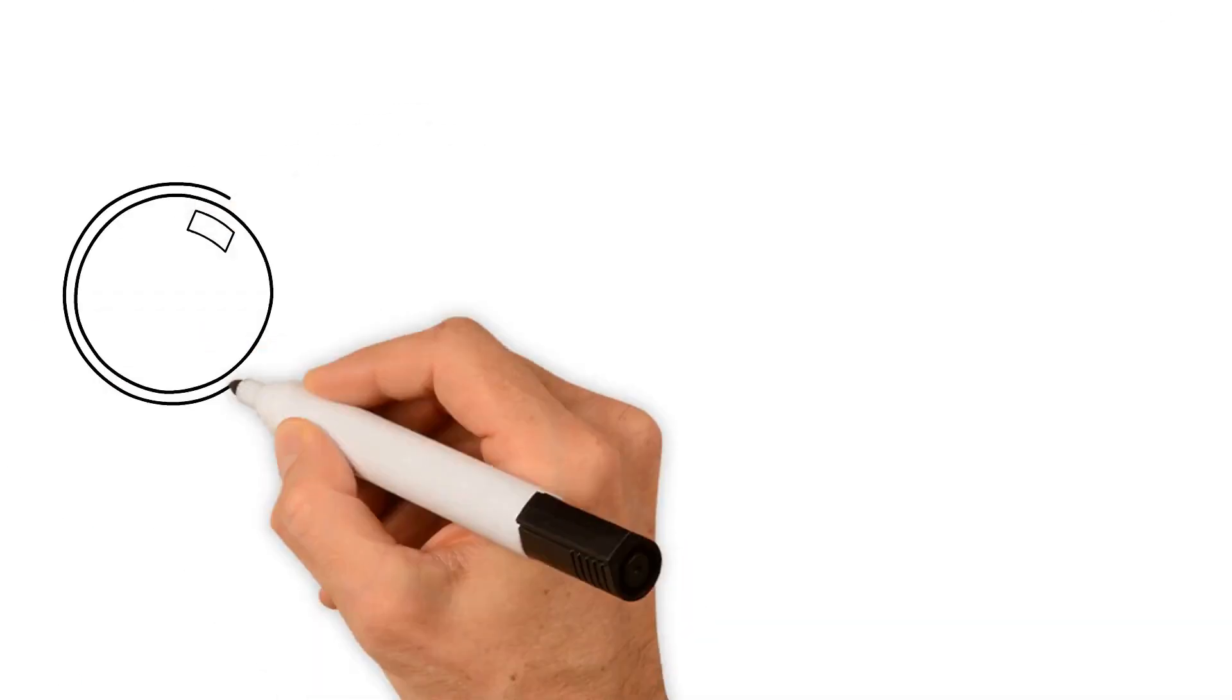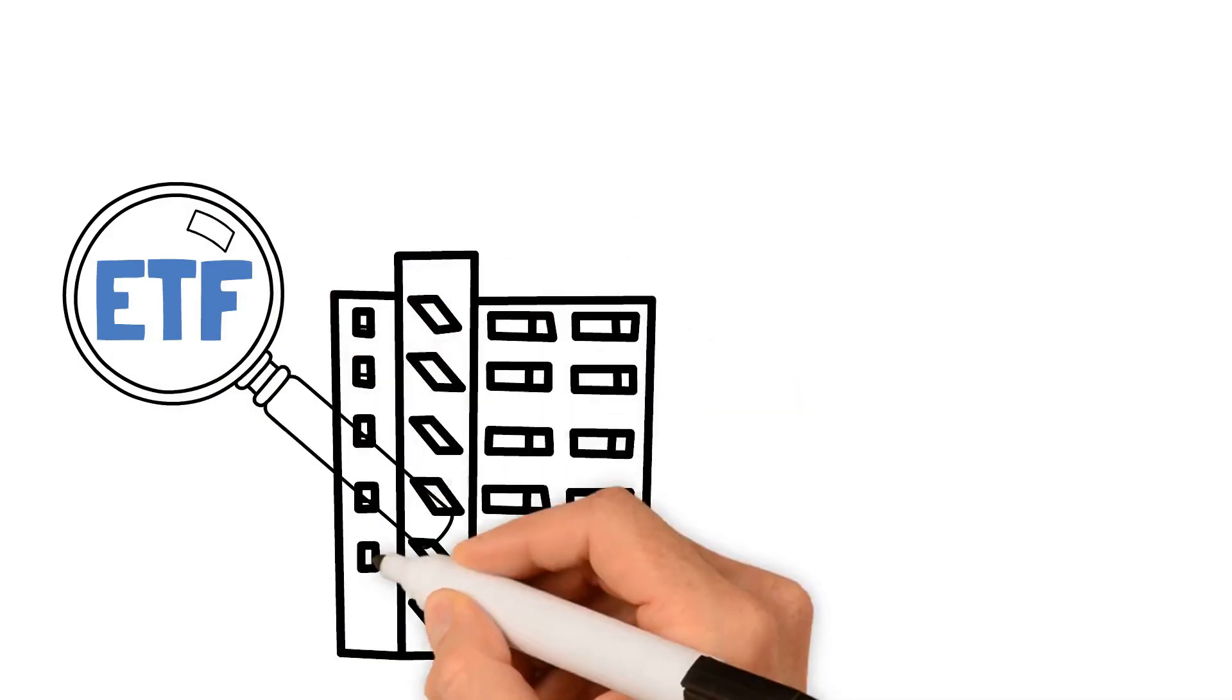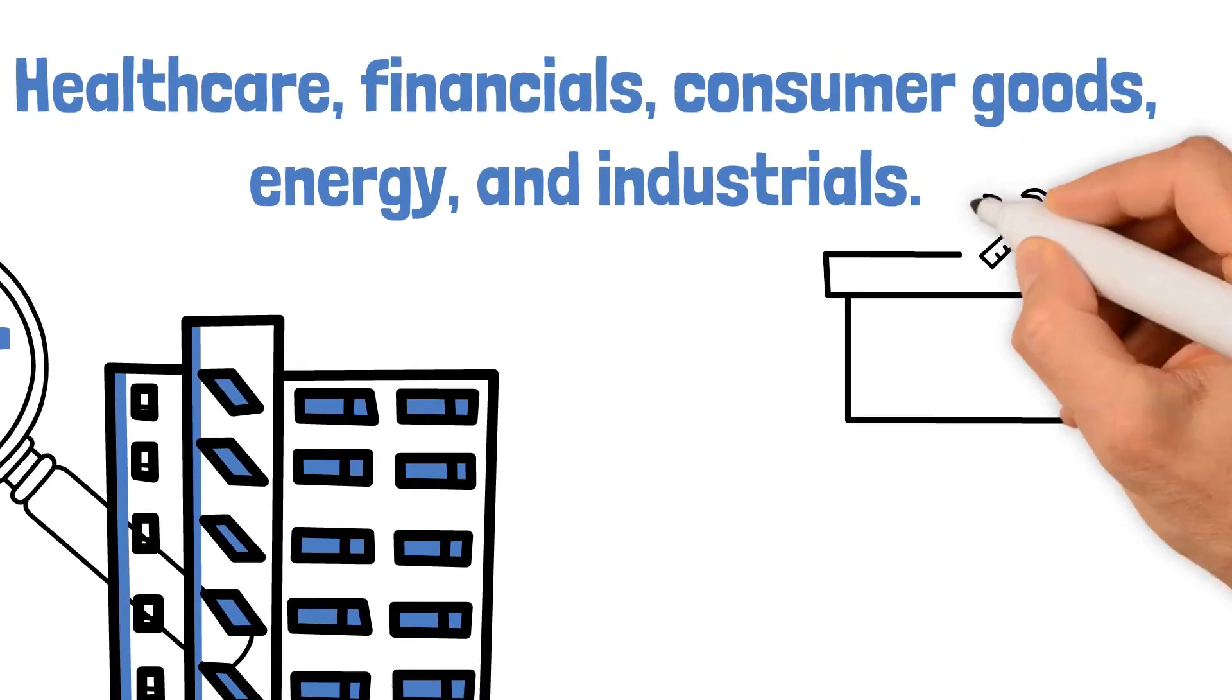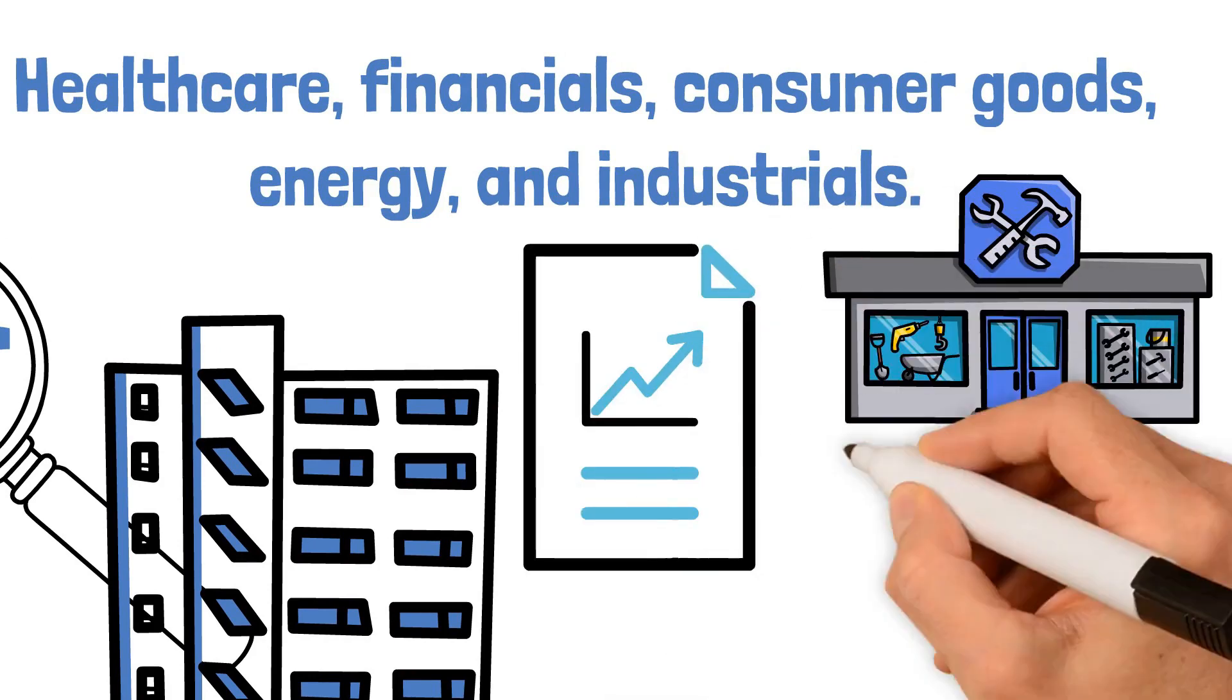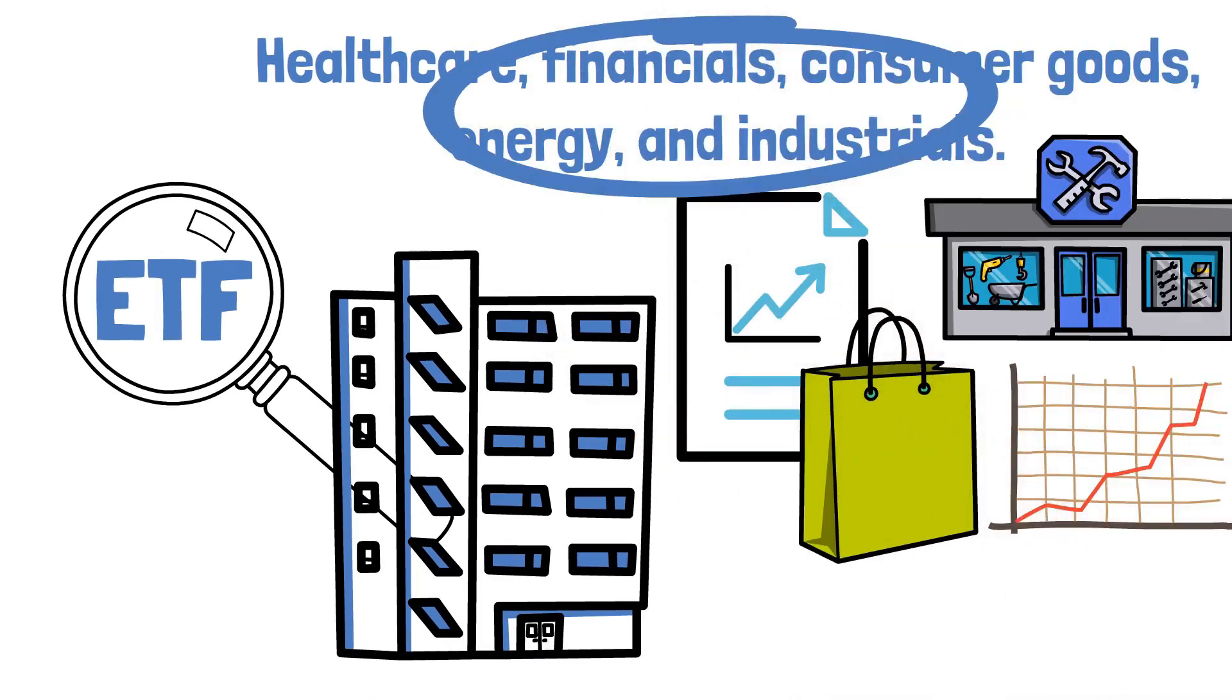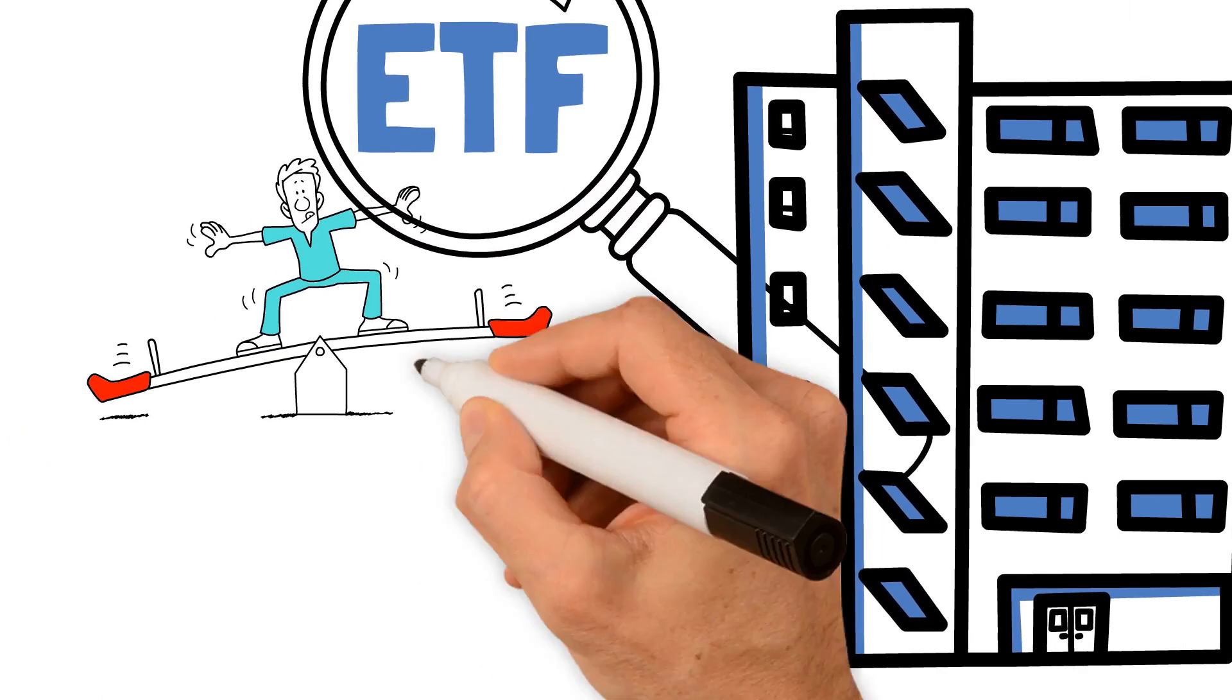The ETF focuses on large-cap value companies that operate in stable industries, including healthcare, financials, consumer goods, energy, and industrials. These industries often provide products and services that are considered essential, leading to consistent demand and recurring purchases, regardless of market conditions. By investing in such companies, the ETF offers a level of stability and reliability that is appealing to income-seeking investors.